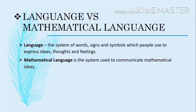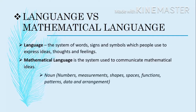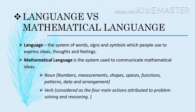In the English language, we have nouns — which is a name of a person, place, or things — and verbs, which are action words. Here in mathematical language, we also have that. But when we say noun in mathematical language, we refer to numbers, measurements, shapes, spaces, functions, pattern, data, and arrangement, while the verb is considered as the four main actions attributed to problem-solving and reasoning.